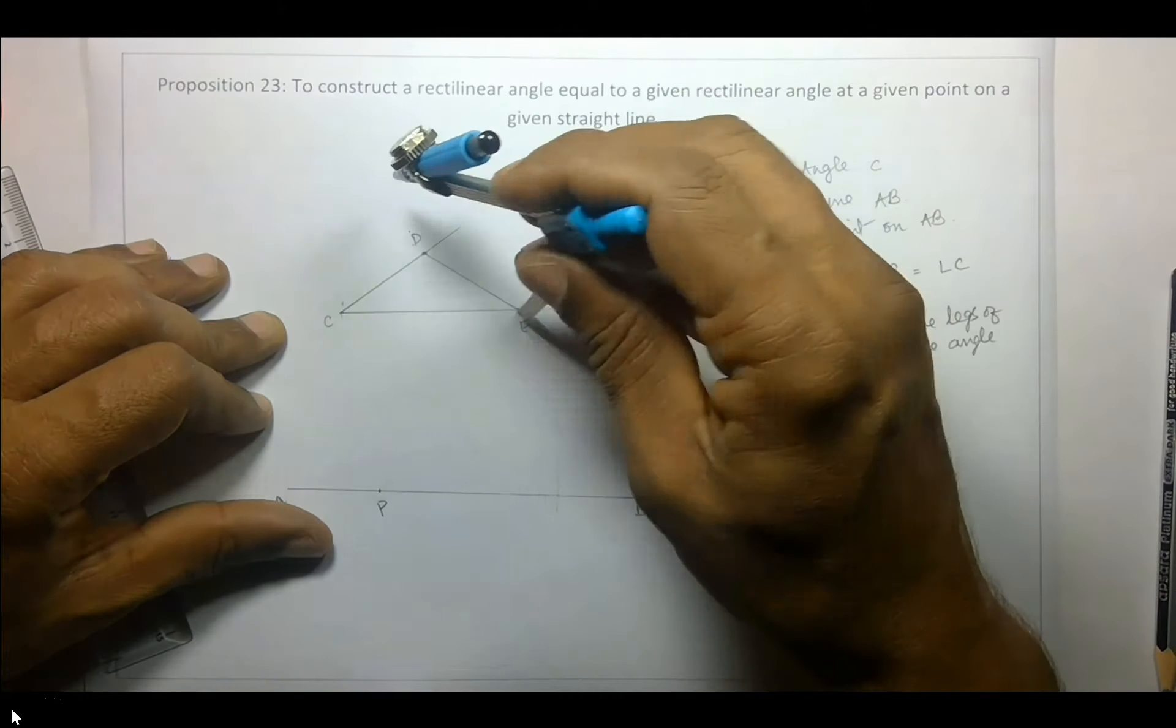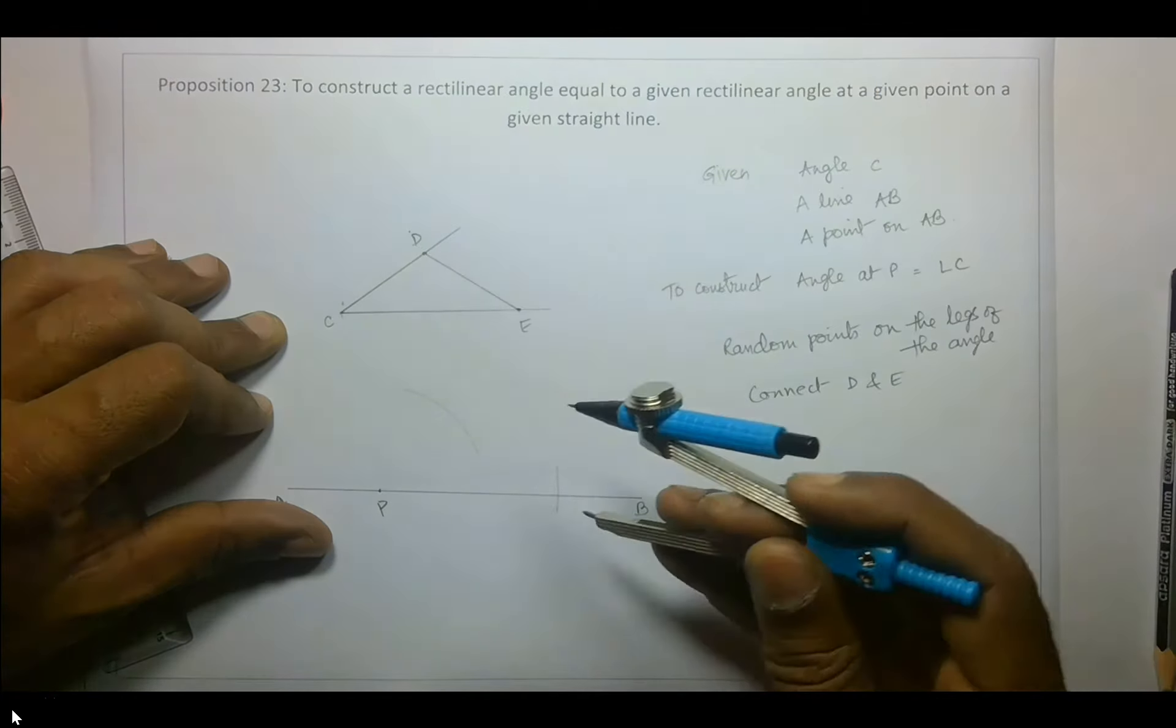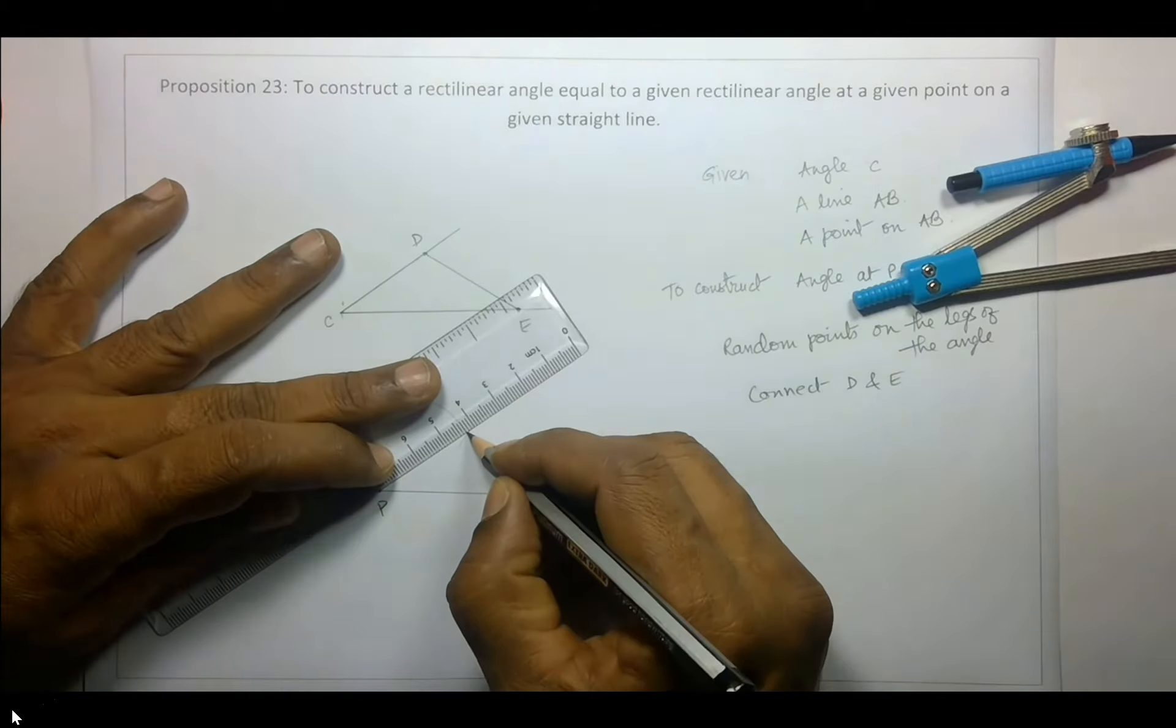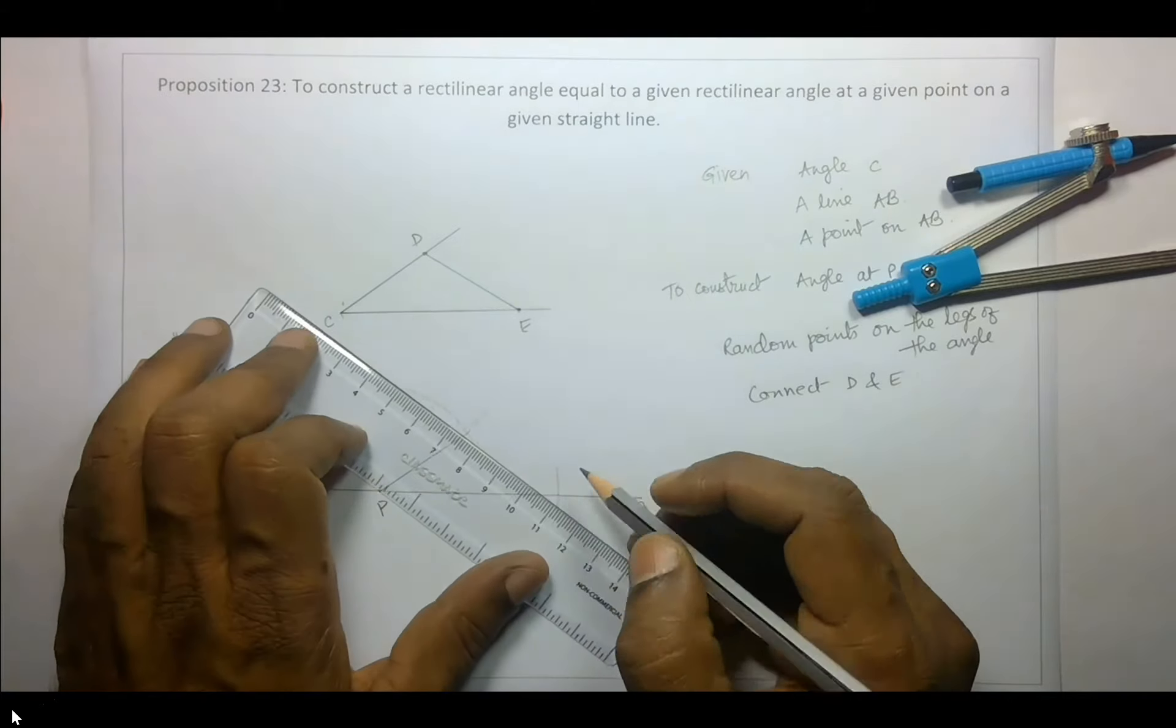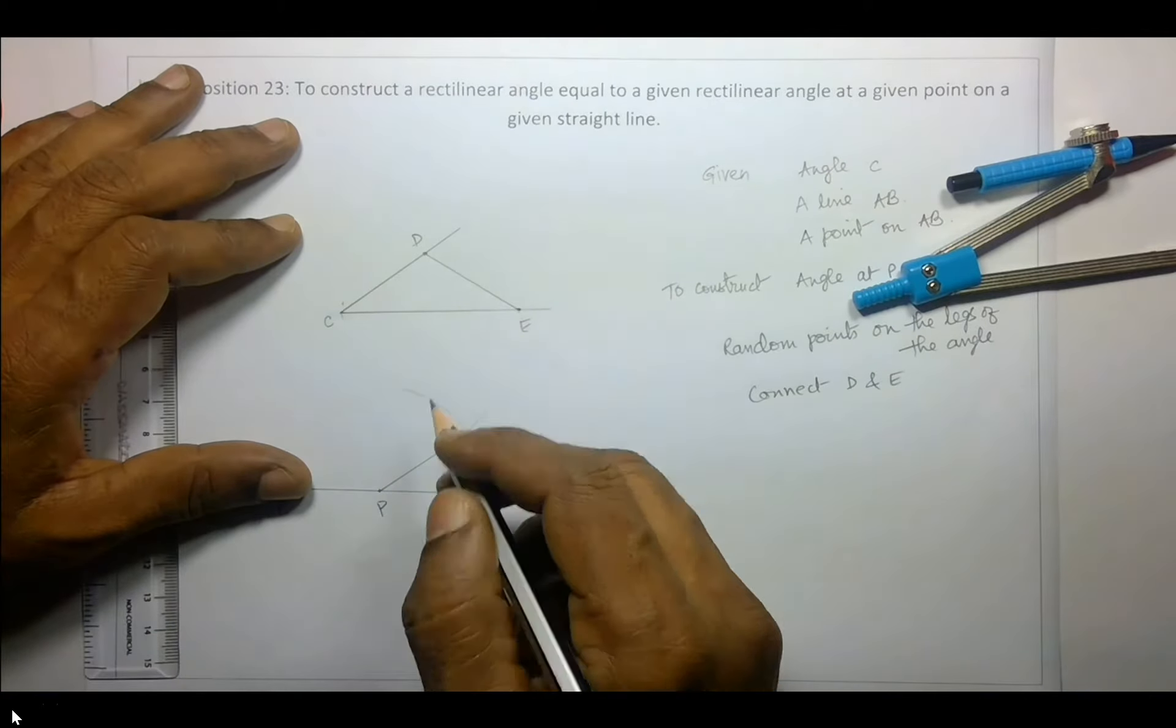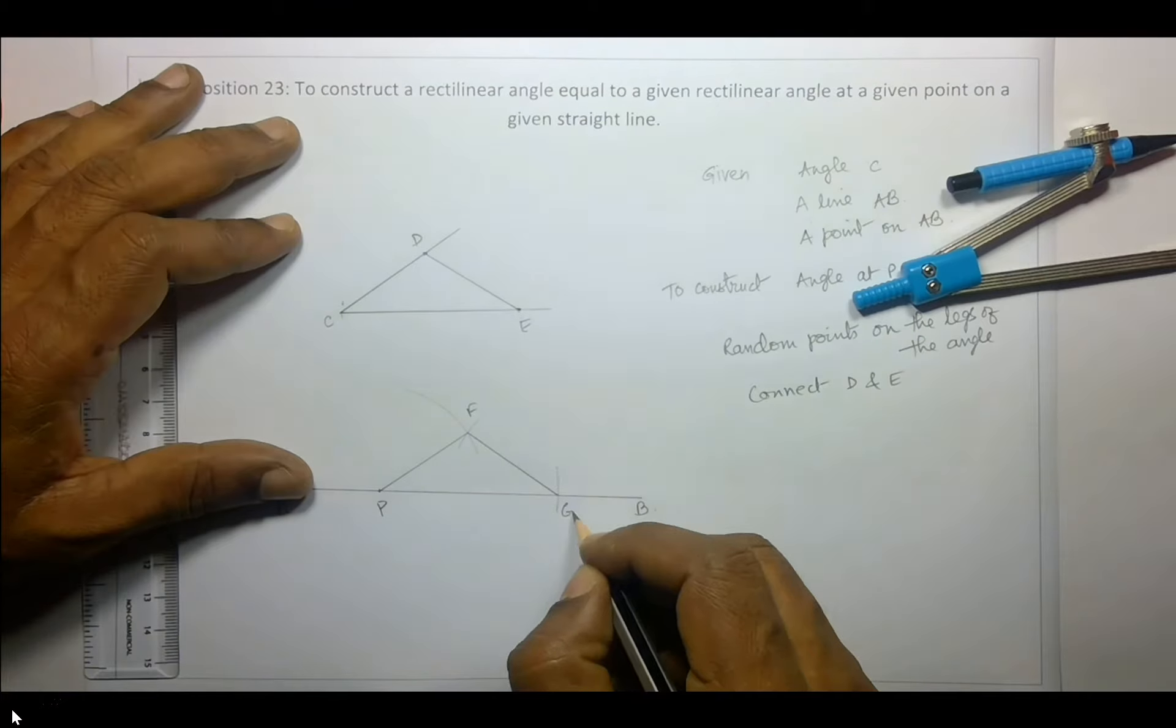Now E, D. Connect these two and connect these two points. Okay, so these are the steps involved in constructing this. Now let us say this is F and this is G.